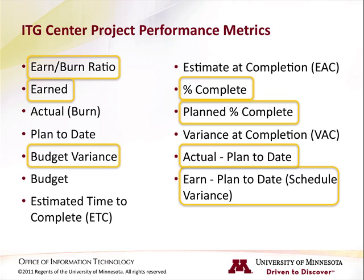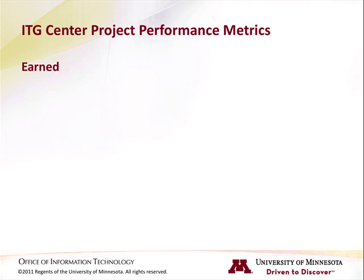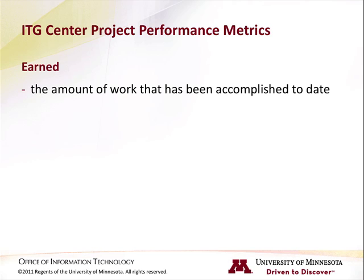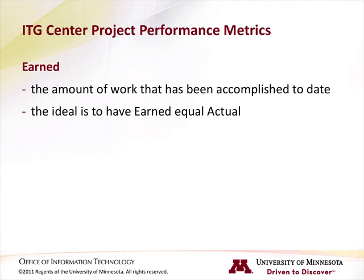Let's start out by looking at earned, and then the earned-burn ratio. Earned represents the amount of work that has been accomplished to date. It's how much you've accomplished for the time you had planned to spend. If everything is going according to plan, then earned should equal actuals. Industry-wide, there are several different methods for calculating the earned metric. At the university, we use a simplified method based on the overall percent complete. The calculation looks like this: Earned equals budget times percent complete.